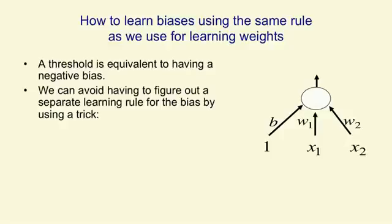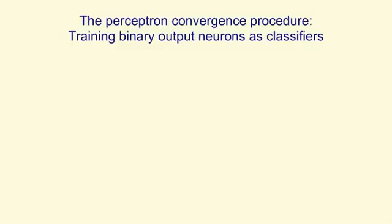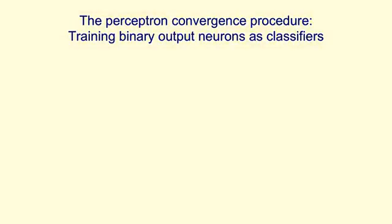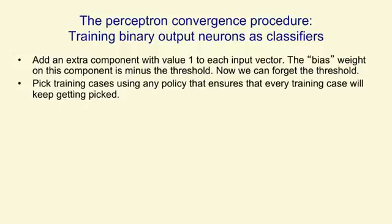Using this trick, we don't need a separate learning rule for the bias — it's exactly equivalent to learning a weight on this extra input line. So here's the very powerful learning procedure for perceptrons, and it's a learning procedure that's guaranteed to work, which is a nice property to have. Of course, you have to look at the small print later about why that guarantee isn't quite as good as you think it is. We first add this extra component with a value of 1 to every input vector — now we can forget about the biases. Then we keep picking training cases using any policy we like, as long as we ensure that every training case gets picked without waiting too long.